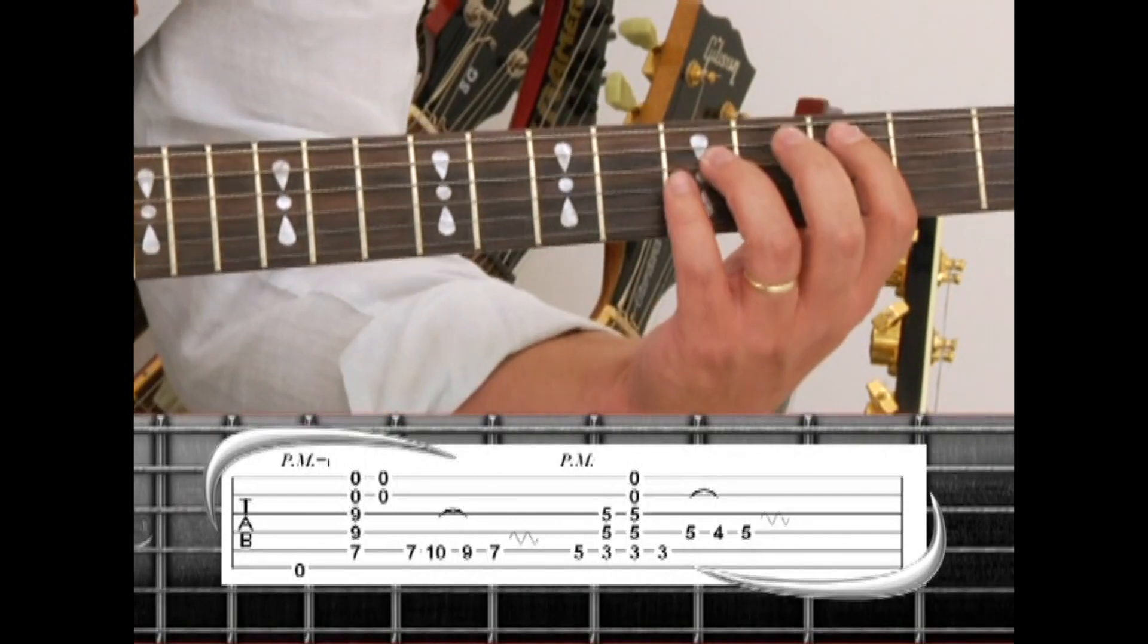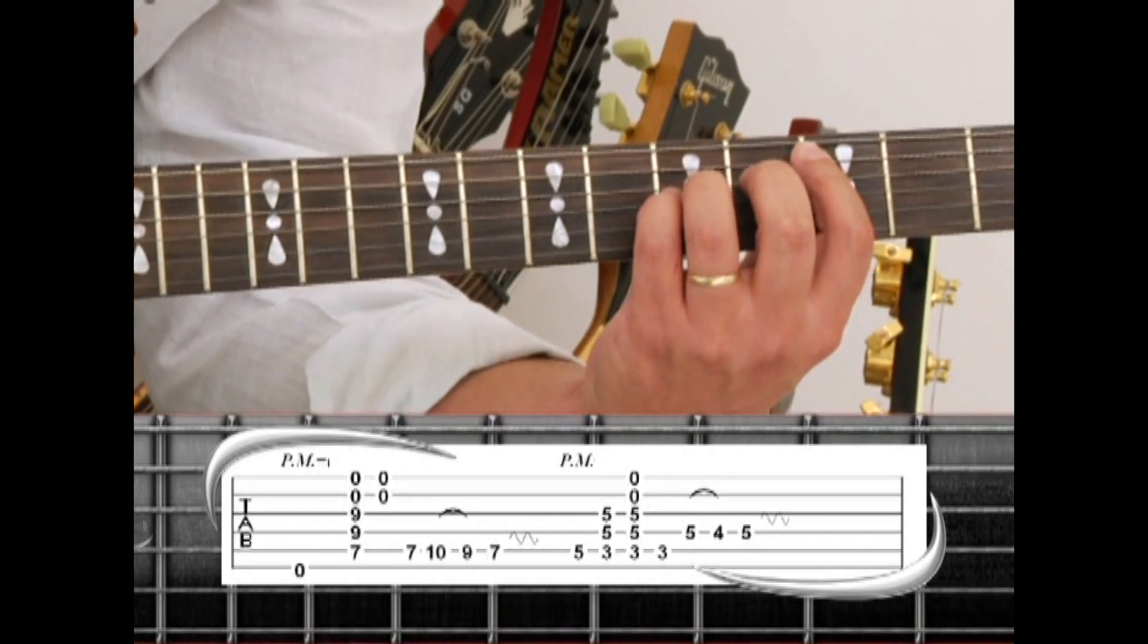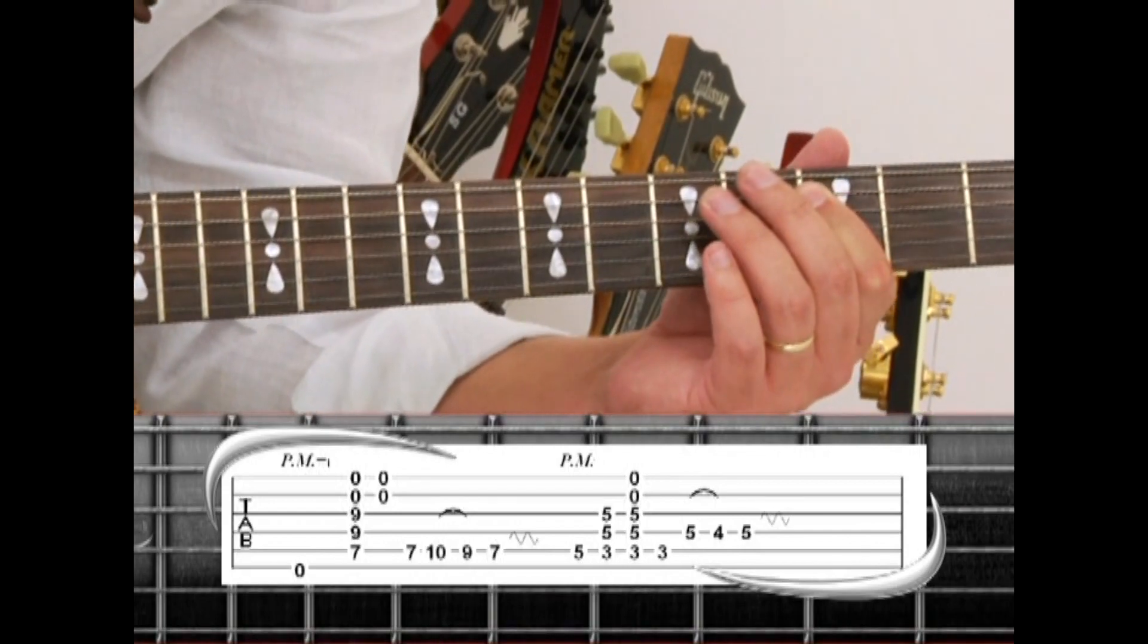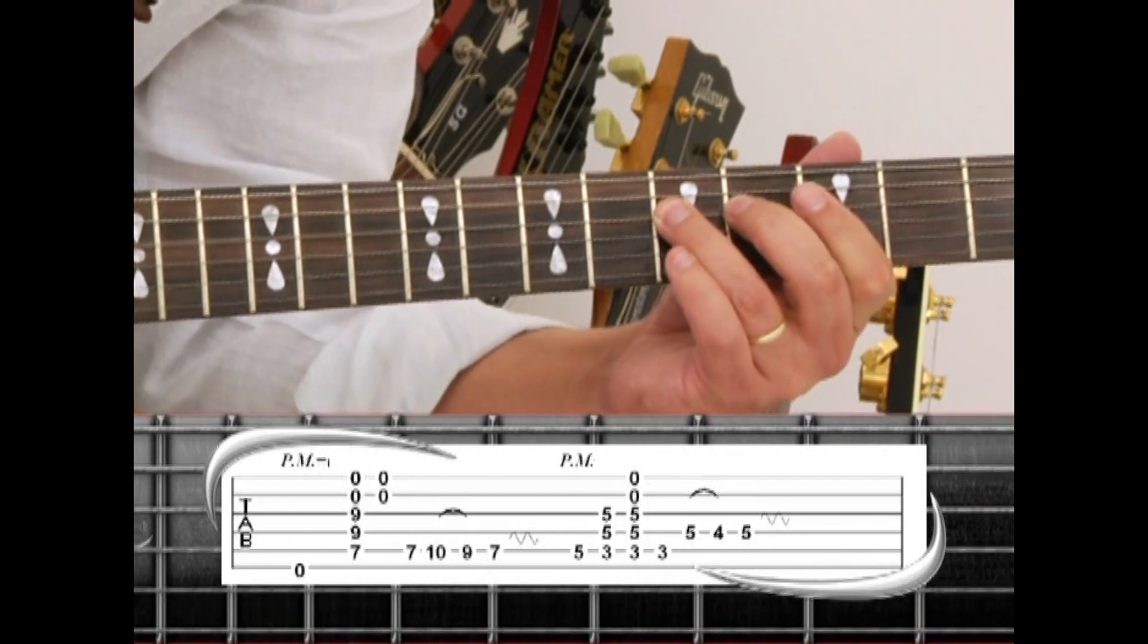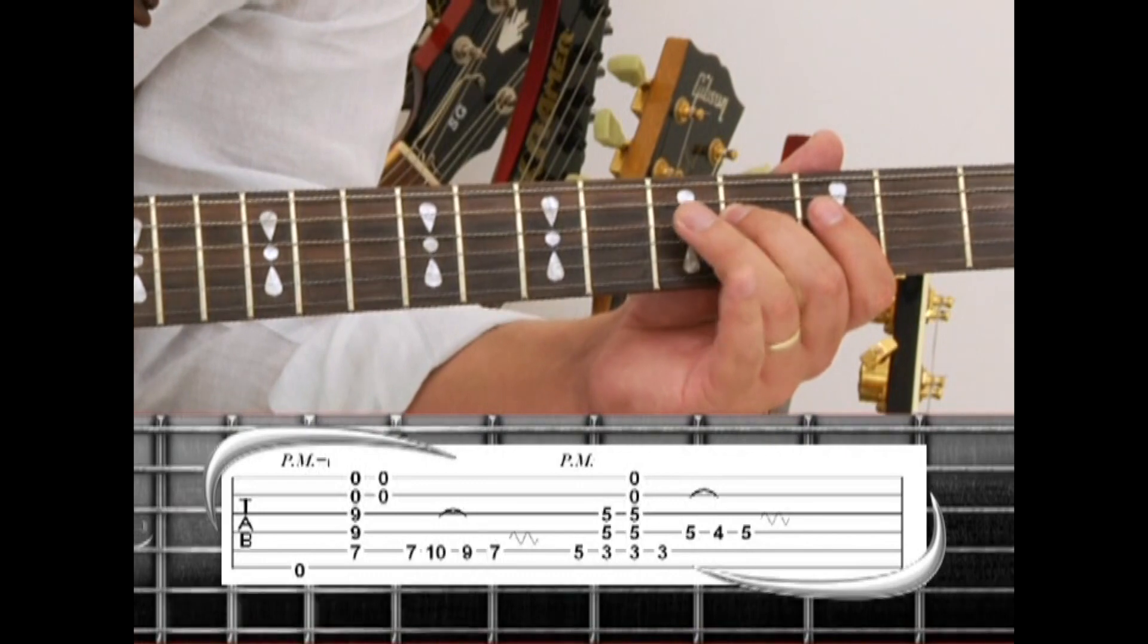Then C5. C5 drone. Then the 5th string 3rd fret to 4th string 5th with the ring. Pull to 4 held by the middle. Back to 5 with vibrato.